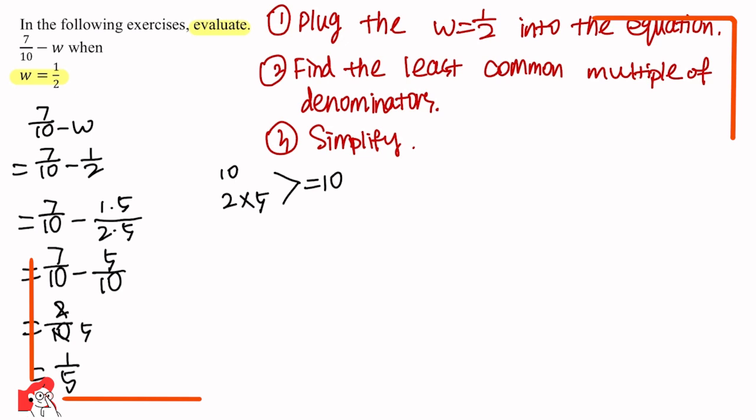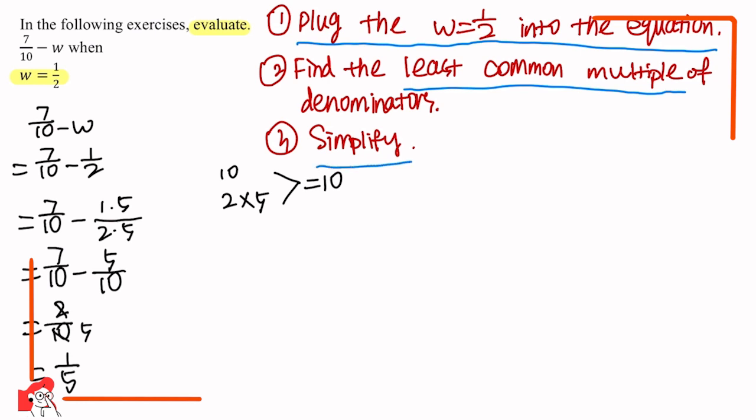Now let's look back at the whole process and conclude the takeaways. Next time you meet such problems, always remember: the first step is to plug the value of w into the equation; then, if the two fractions have different denominators, find the least common multiple of those denominators; and the last step is to simplify the answer. We are done with this question — thank you!